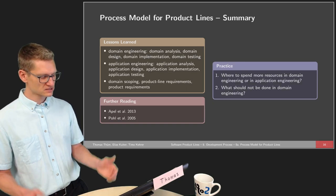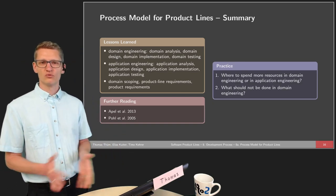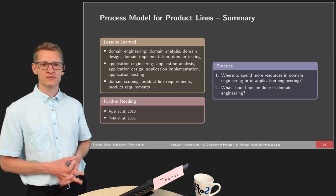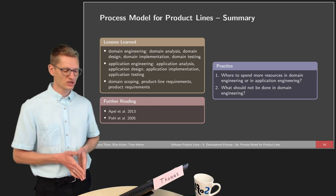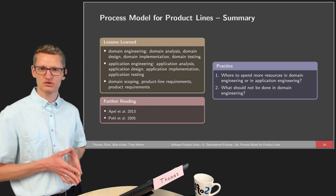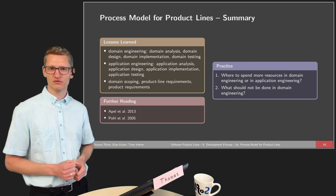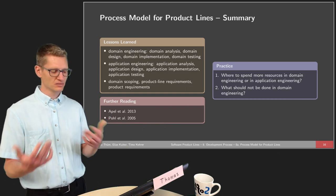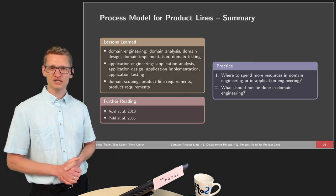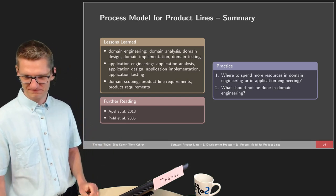Something to think about: where should we spend more resources — in domain engineering or in application engineering? And perhaps more explicitly, what should not be done in domain engineering? You could always argue to do as much as possible in domain engineering, but do you have examples of what should not be done there? I hope you enjoyed the lecture and hope to see you again in the next video. Bye!